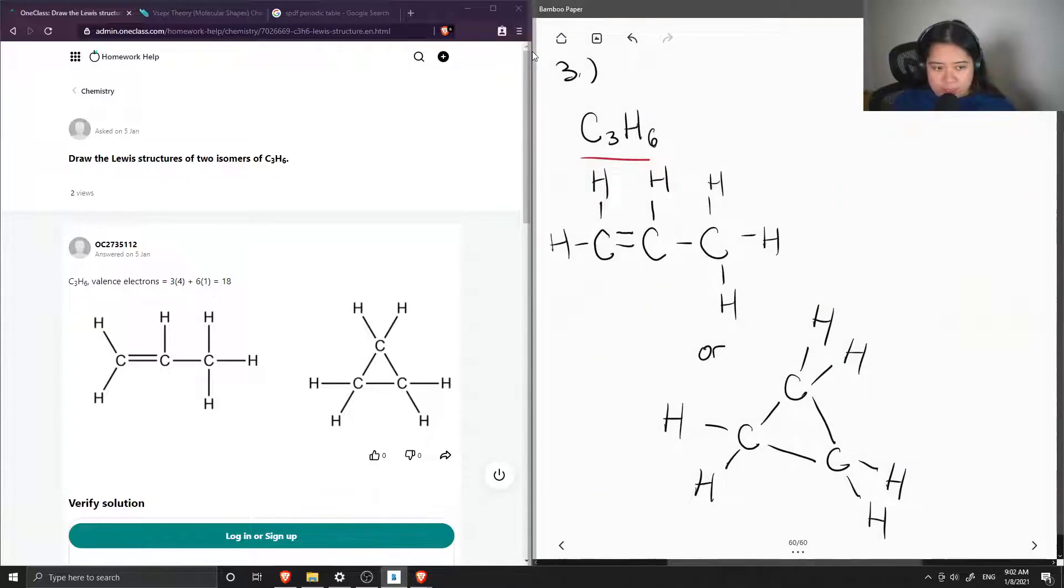Now let's try to name these. We have a three-carbon chain. We know the parent is prop, and the fact that it has a double bond means it ends in -ene.